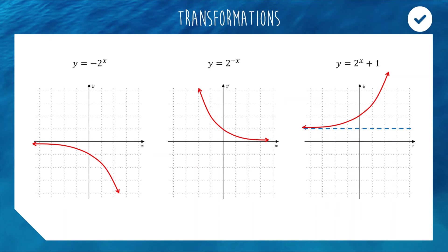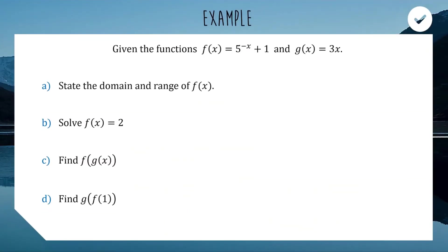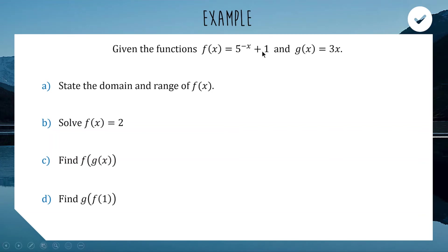One last quick example to get more comfortable with these functions. We have f of x — an exponential function — and g of x, a linear function. The first question, probably the toughest part, is to state the domain and range of f of x. These questions are much simpler if you understand what the graph looks like. We'll build up 5 to the negative x plus 1 using the transformations we just looked at.